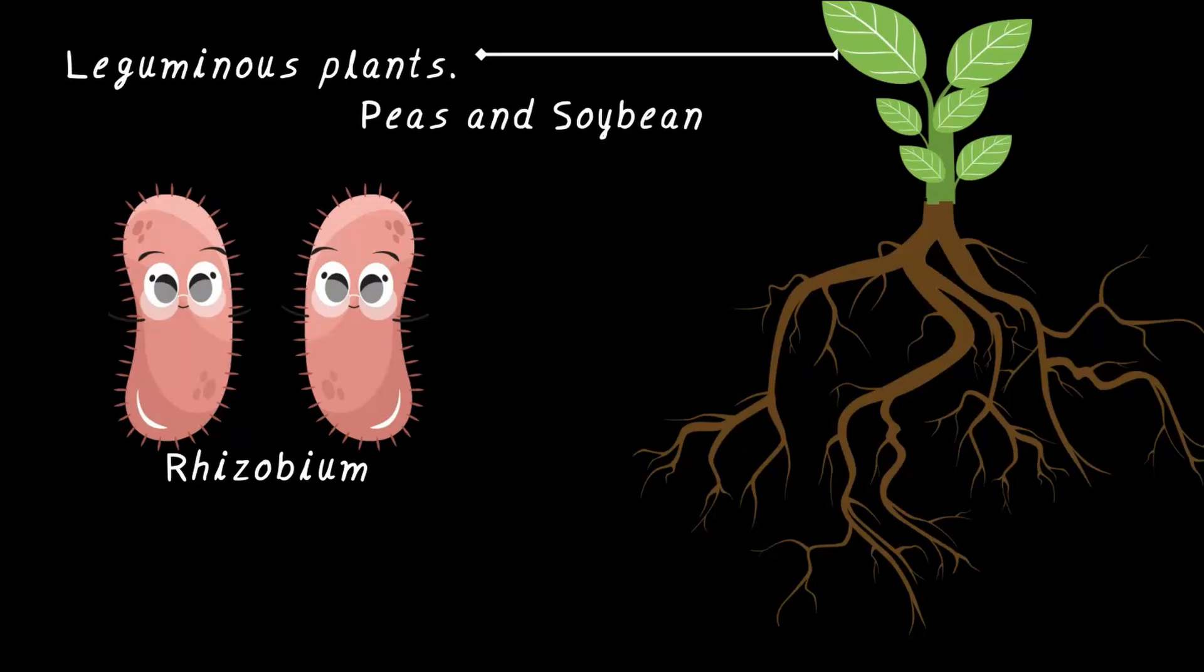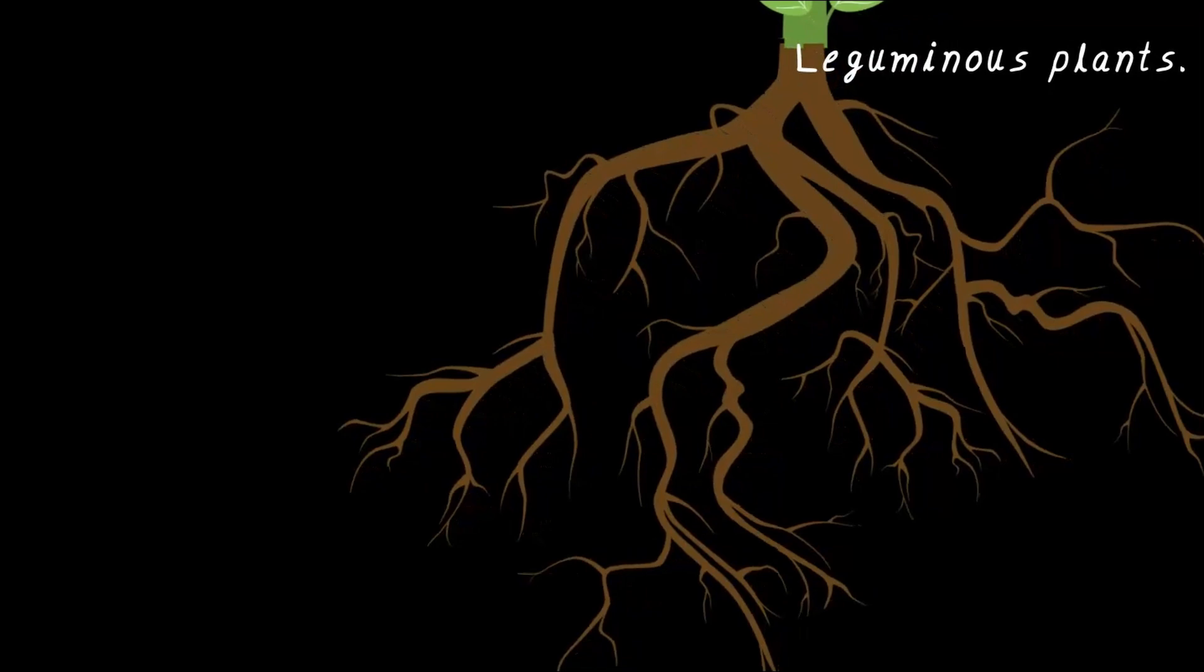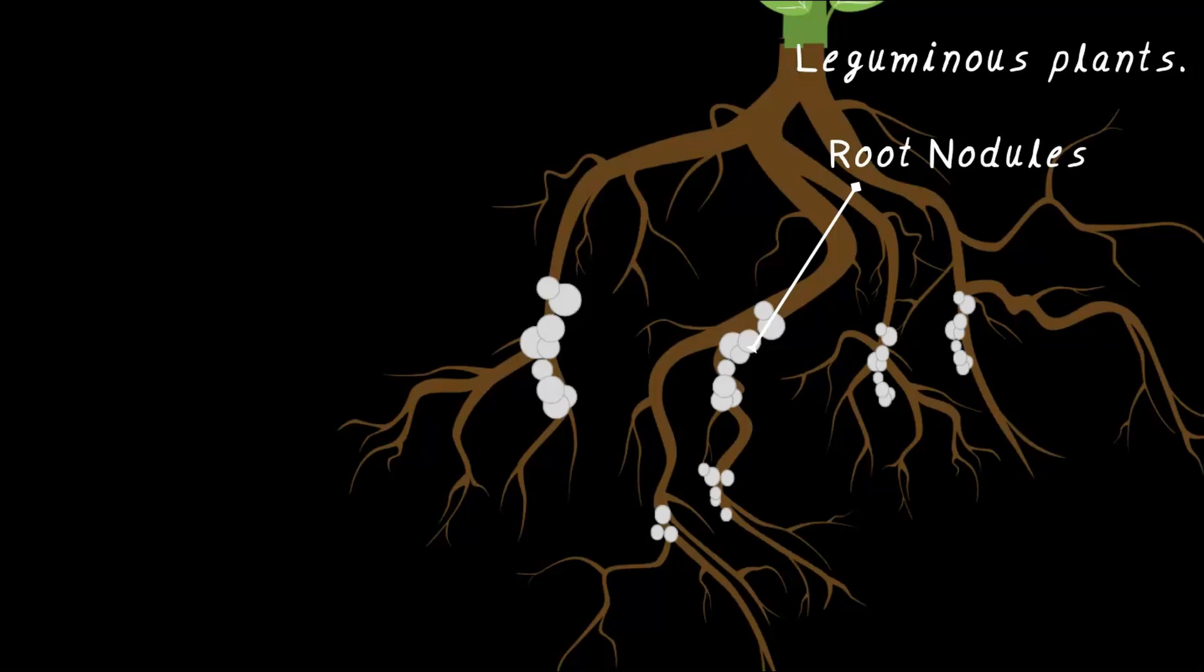These plants have special little homes in their roots called root nodules. Do you see that? Those small bumps on the roots. Those are root nodules. And guess what? Rhizobium actually helps build those root nodules. It's like bacteria building its own house inside the plant's roots.